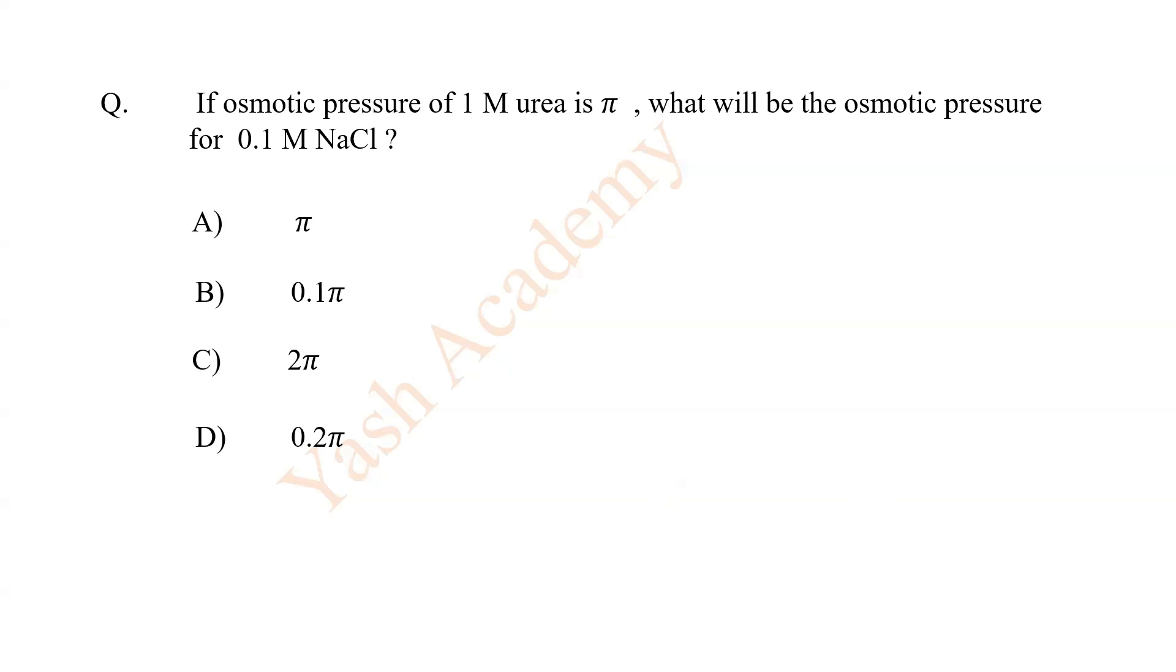If osmotic pressure of 1 molar urea is pi, what will be the osmotic pressure of 0.1 molar NaCl? D, 0.2 pi.